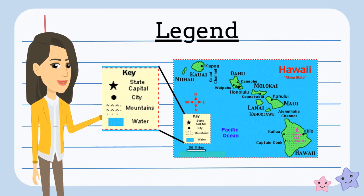The next part of the map is called a legend or the map key. This is a list of what each shape on a map means.